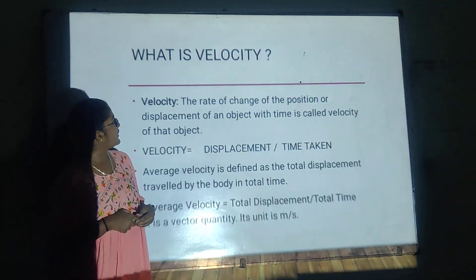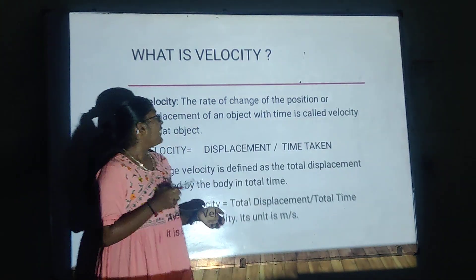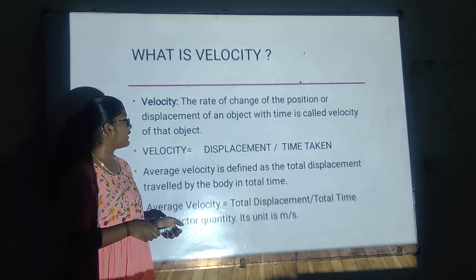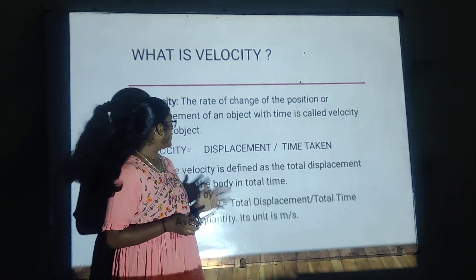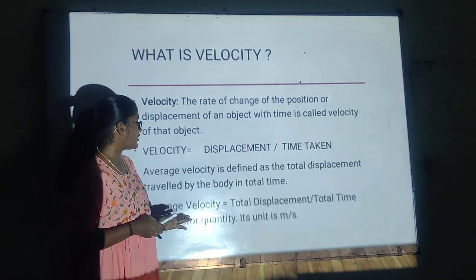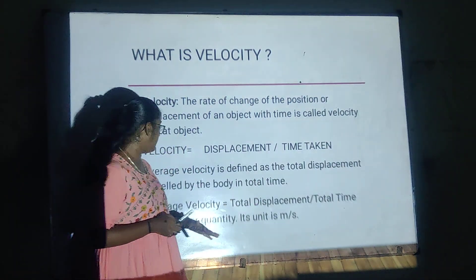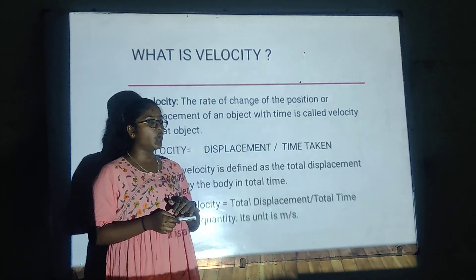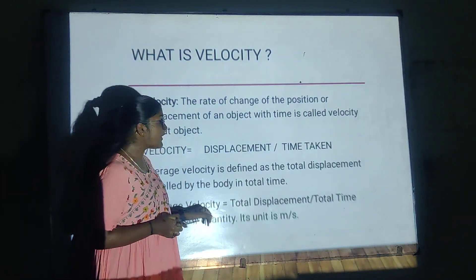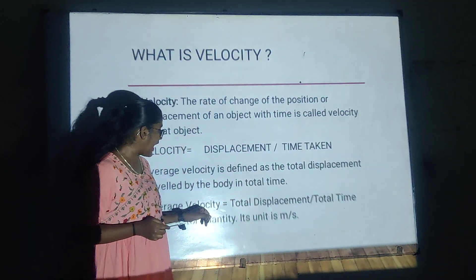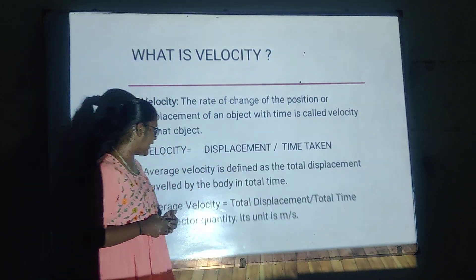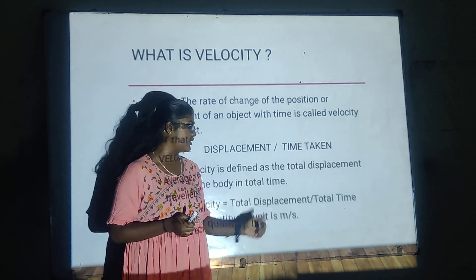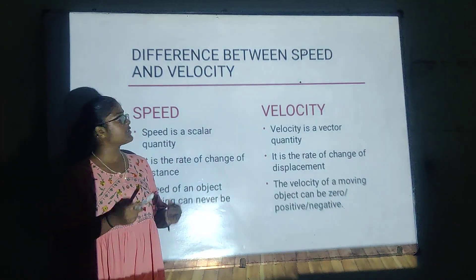Now let us move on to velocity. The rate of change of displacement of an object with time is called velocity. The formula for velocity is displacement divided by time taken. Average velocity is total displacement divided by total time taken. It is a vector quantity since displacement has a direction, and its unit is meters per second.